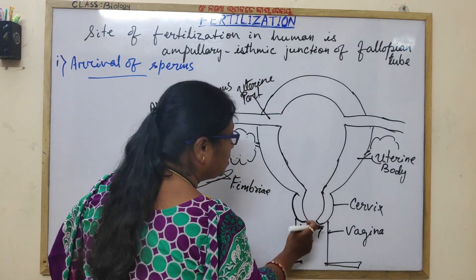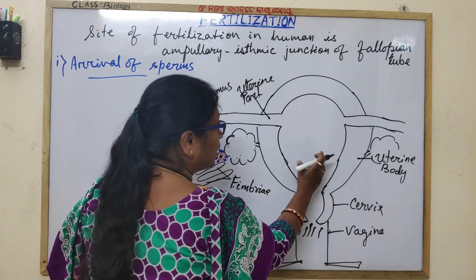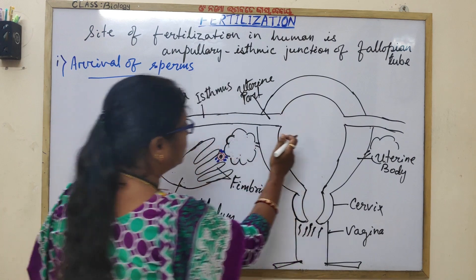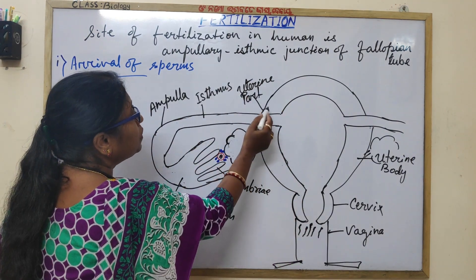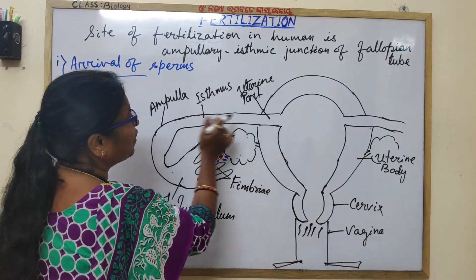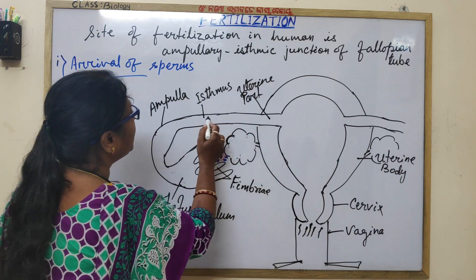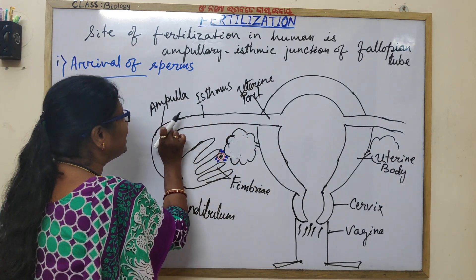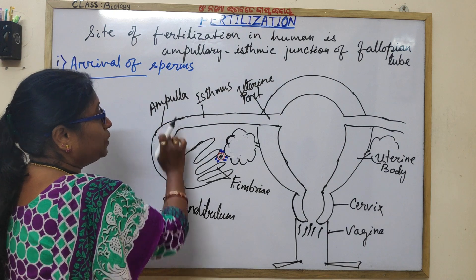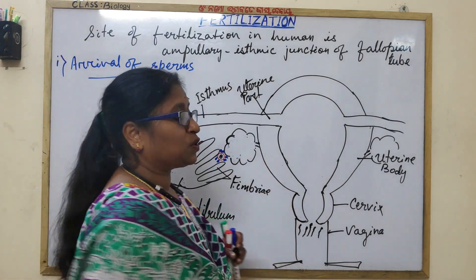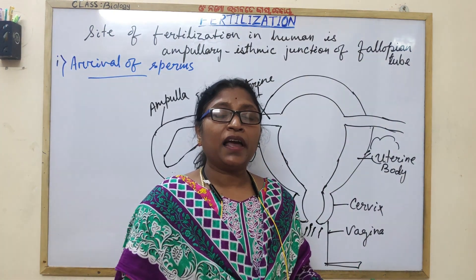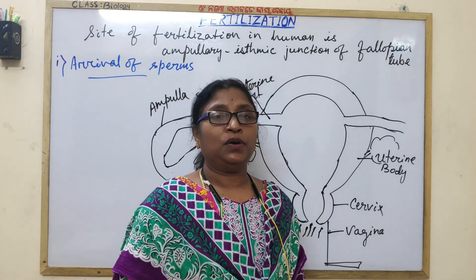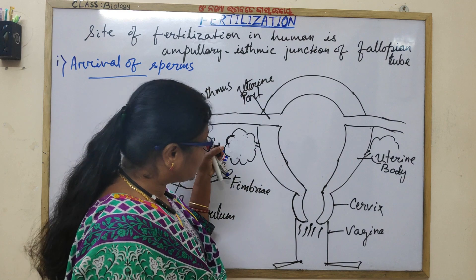Sperms are deposited in the vagina but they have to travel through the cervix, the uterine cavity, then through the different parts of the fallopian tube — the uterine part, then the isthmus — to reach the fertilization site. They have to travel a long path.